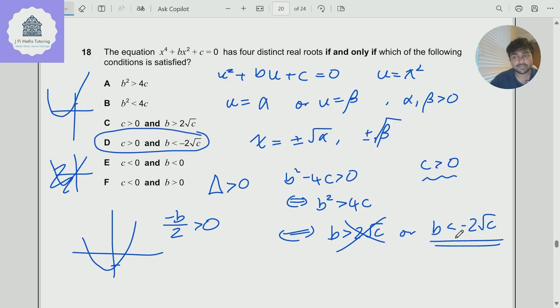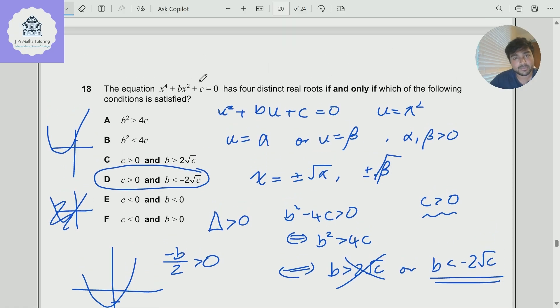A nice little problem here. Easy to get kind of confused between what's necessary and what's sufficient here. So a good thing to do is if you're a little bit unsure, just check. So check if b is less than minus 2 root c and c is bigger than zero, what are your solutions to this? And the easy way to do this or a way to do this is just by using the quadratic formula.